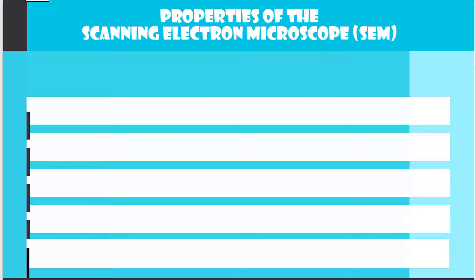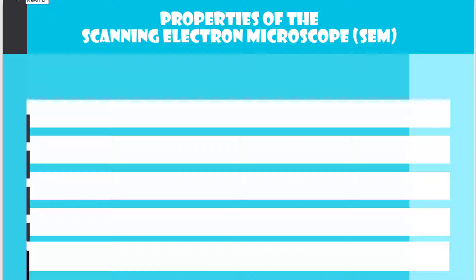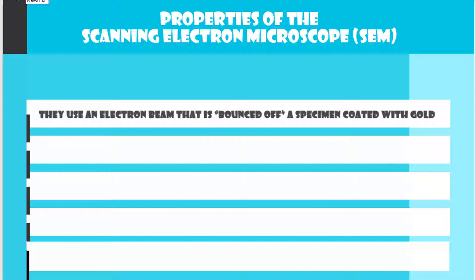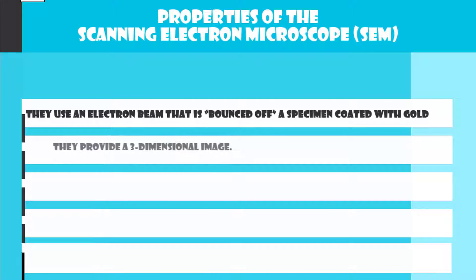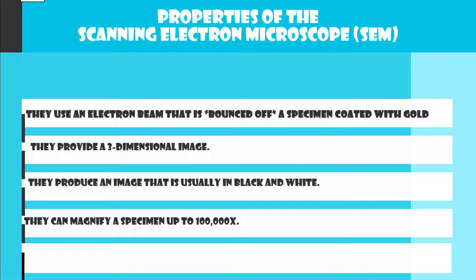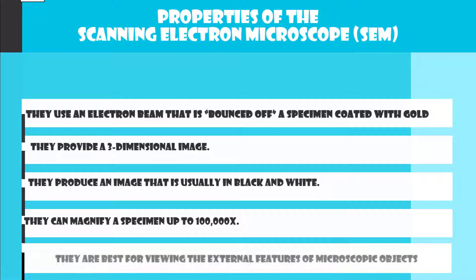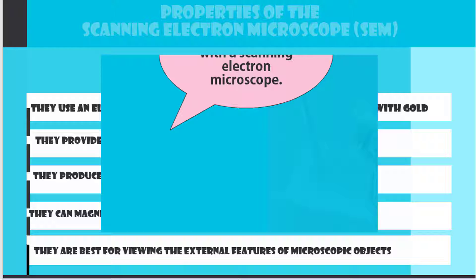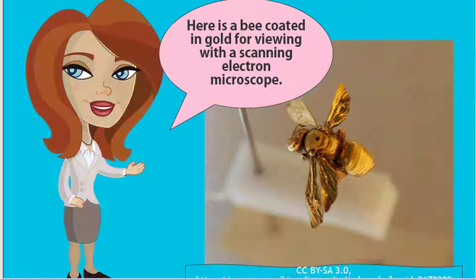Properties of the scanning electron microscope or SEM: they use an electron beam that is bounced off a specimen coated with gold, they provide a three-dimensional image, they produce an image that is usually in black and white, they can magnify a specimen up to 100,000 times, and they are best for viewing the external features of microscopic objects. Here is a bee coated in gold for viewing with a scanning electron microscope.